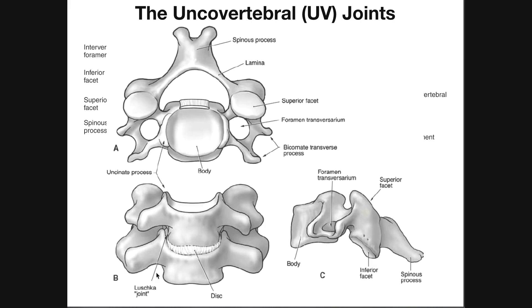This is called the Luschka joint, or joint of Luschka, also called the uncovertebral or UV joint. Importantly, this uncovertebral joint is lined by a thin layer of fibrocartilage — not hyaline cartilage as you'd see in most articulating surfaces. This fibrocartilage is likely derived from the annulus fibrosus of the nearby intervertebral disc.